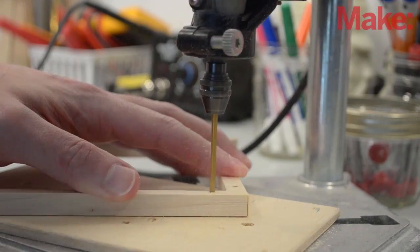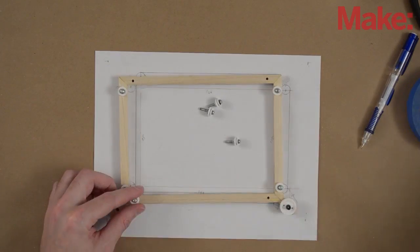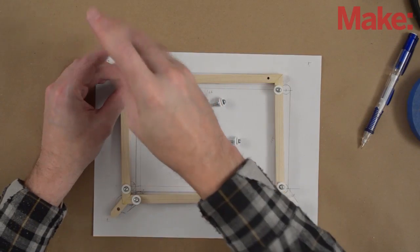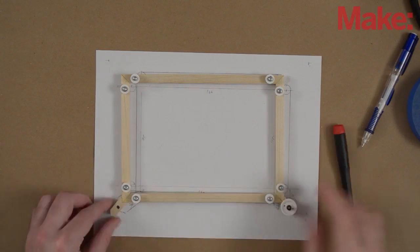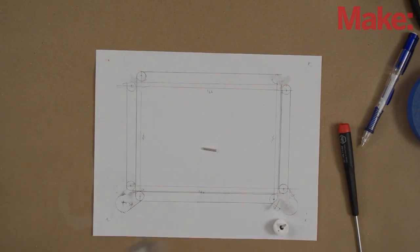After the glue is dried, I drill axle holes for all the pulleys. The eight central pulleys float, spinning freely on their axles, while the control pulleys are connected to their axles, which will be turned by knobs. For these, I use a bit of copper tubing as a bushing to reinforce the wood.